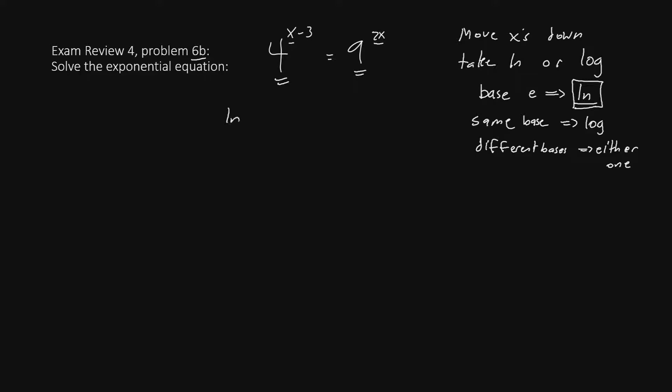So we take ln of both sides. We'll have ln of 4 raised to the x minus 3 equals ln of 9 raised to the 2x. Once we have taken the ln, we can move the exponents down.